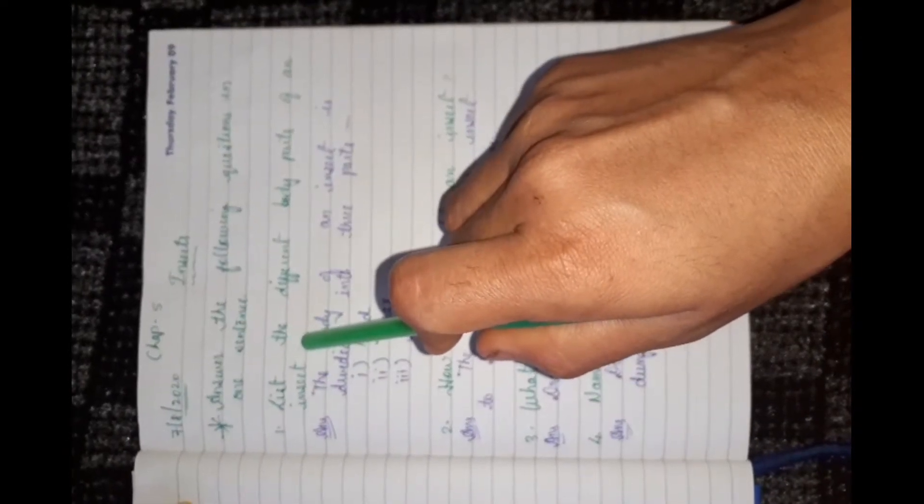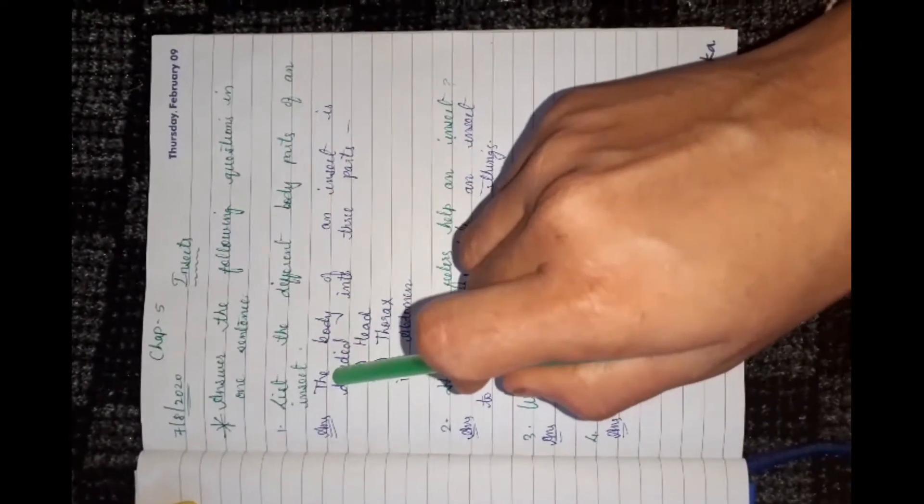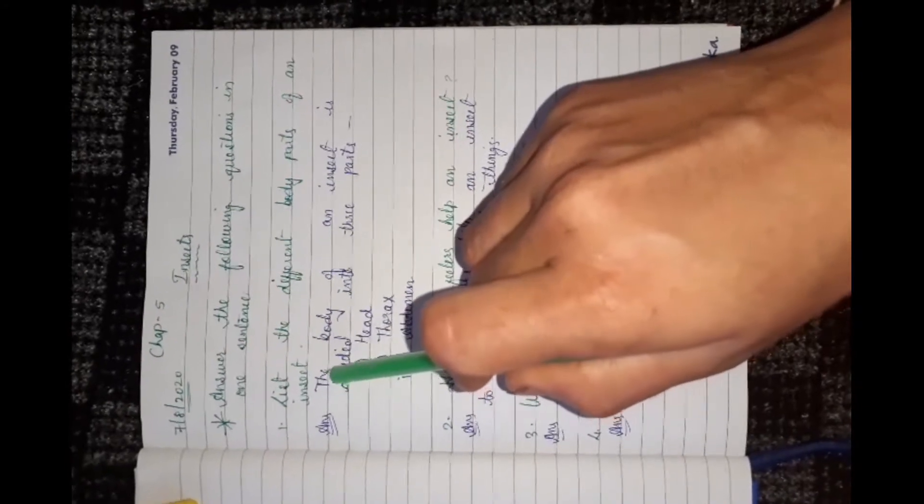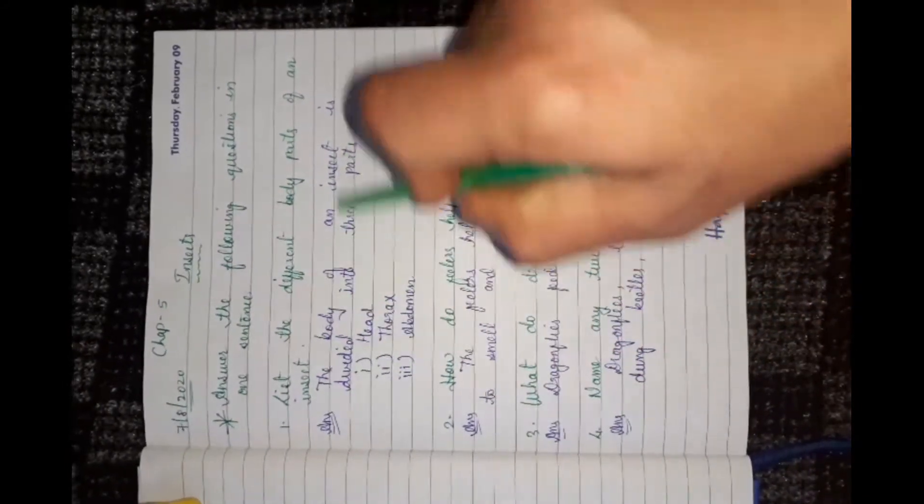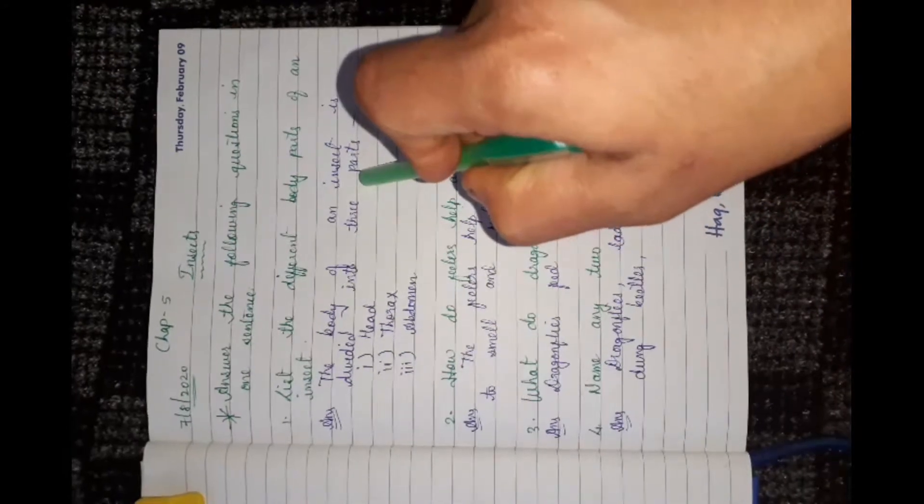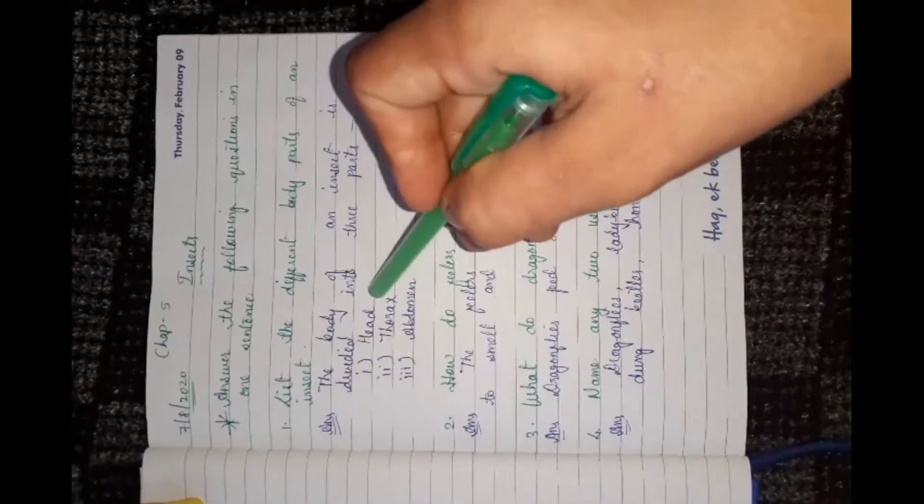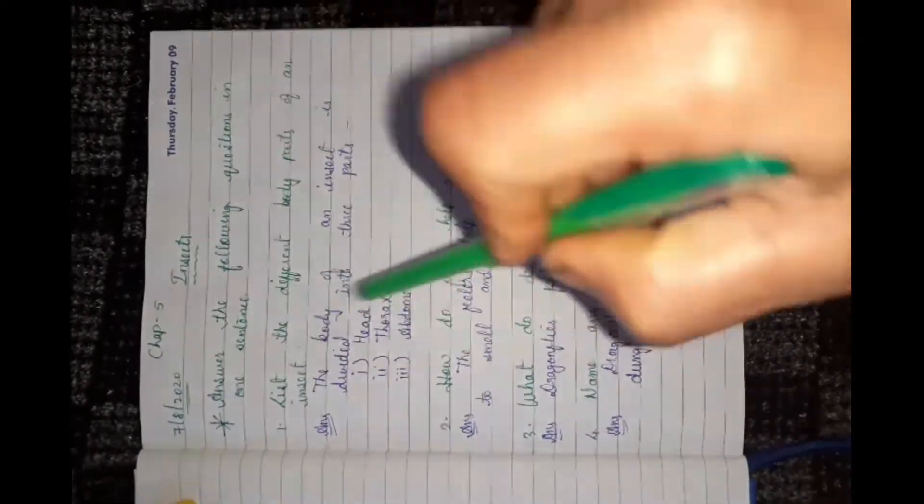Insects ke body parts likhnay hain. So, ye toh humayin pata hain. The body of an insect is divided into three parts. Korn-korn se three parts hotate hain? Head, thorax and abdomen.